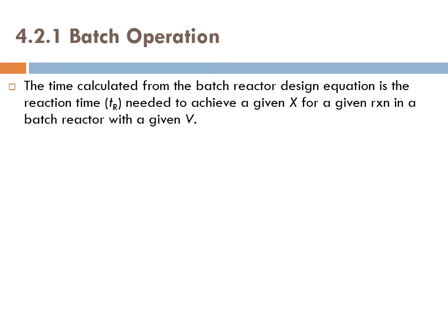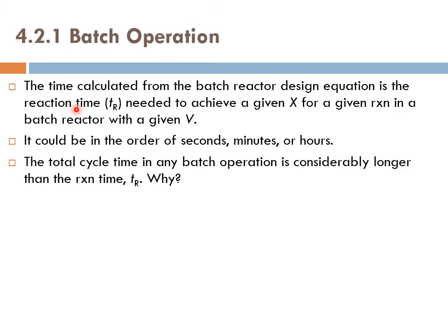The time calculated from the batch reactor design equation is the reaction time tR needed to achieve a given conversion for a given reaction in a batch reactor with a given volume. It could be in the order of seconds, minutes, or hours, depending on the rate of reaction. If the reaction was fast, then probably the reaction time is going to be in the order of seconds or minutes. If the reaction was slow, then it's going to be in order of hours. The total cycle time, however, for any batch operation is considerably longer than the reaction time tR.